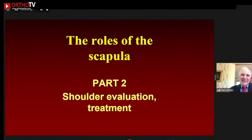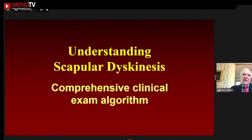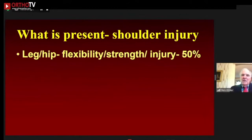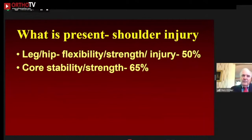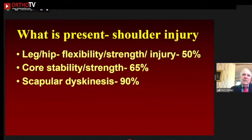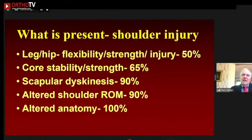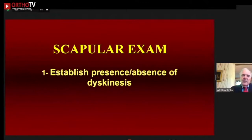Now let's discuss how we evaluate this and start doing some treatment. We have developed a stepwise algorithm of evaluation. We know that in up to 50% of shoulder pain cases there are abnormalities of the leg, hip, and flexibilities and strength — and you really get maximum scapular muscle activation with normal hip and core strength. About 65% of the time hip and core is weak, 90% of the time scapular dyskinesis is present, and altered shoulder motion and altered anatomy are also common. You need a comprehensive evaluation to properly treat the shoulder problem.